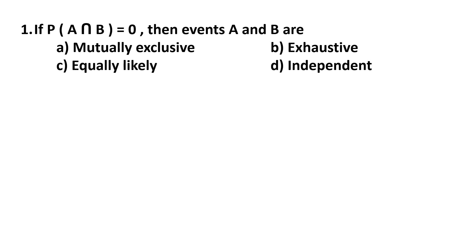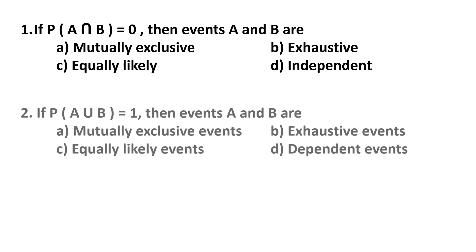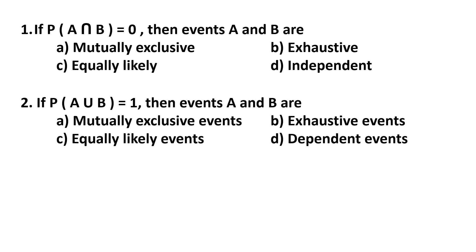Question 2. If probability of A union B is equal to 1, then events A and B are: mutually exclusive events, exhaustive events, equally likely events, or dependent events.